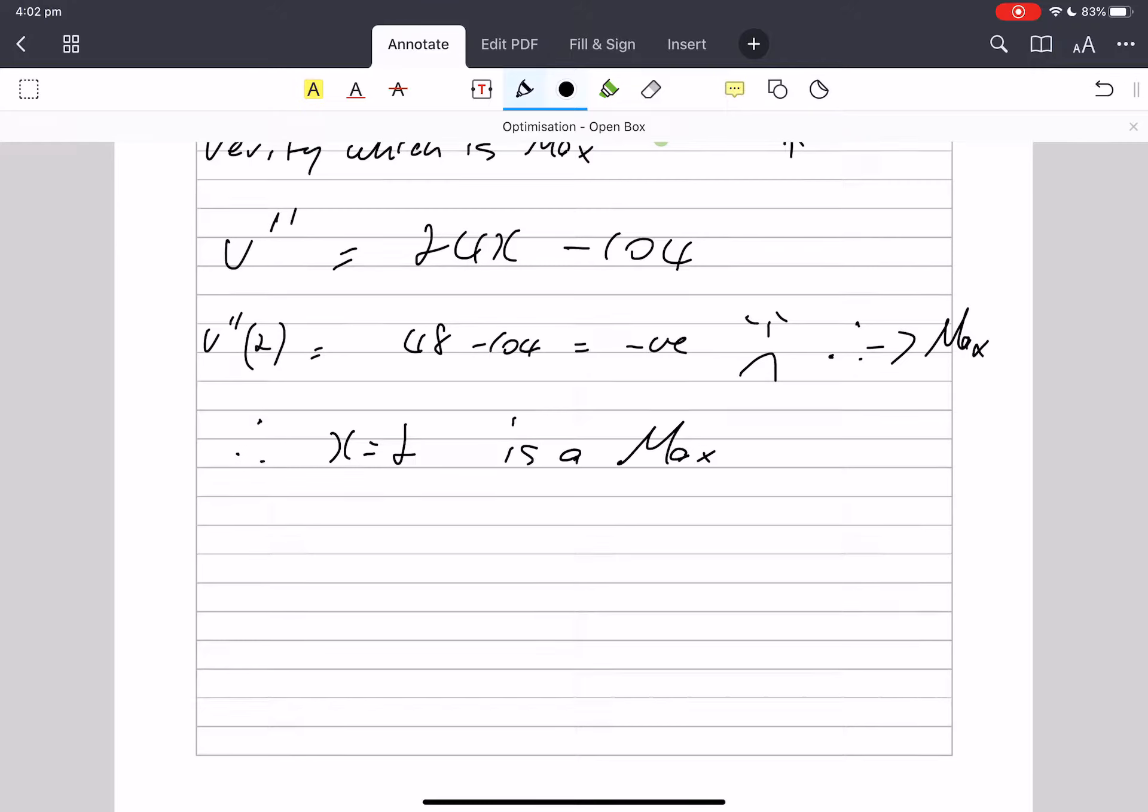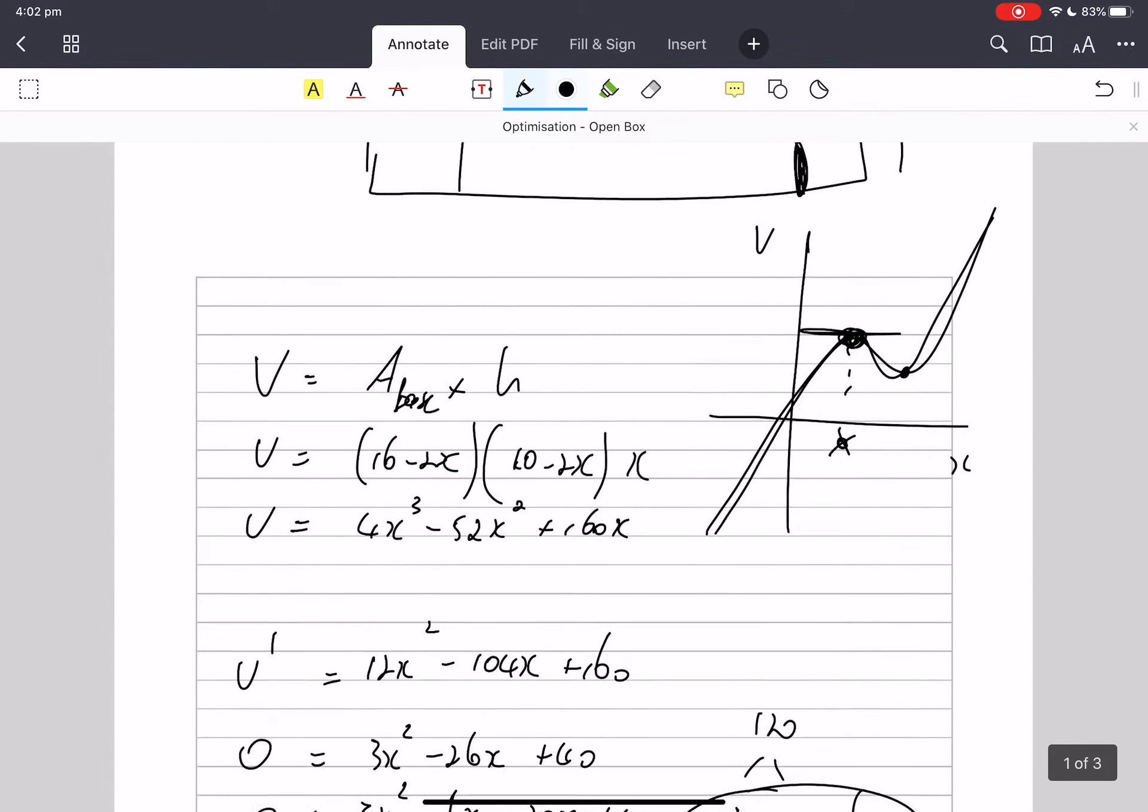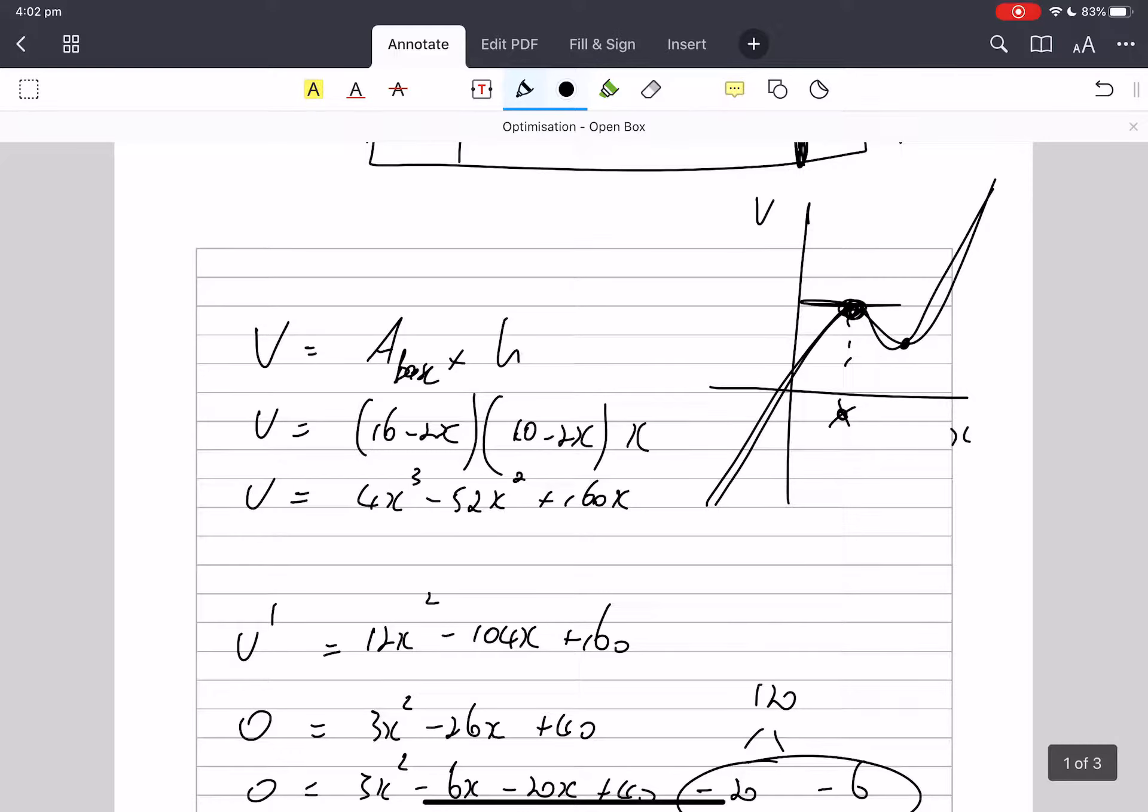Now all I need to do is to work out the maximum volume, and that happens where x is 2. What was my—I wish I could copy paste on this thing. All I've got to do, this is volume equals—so all I'm going to do is put 2 where that is.